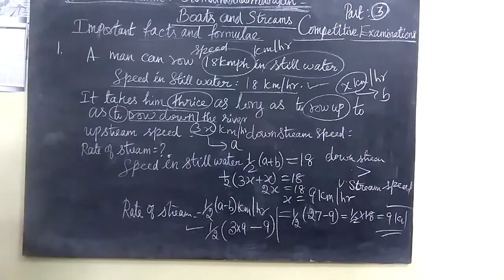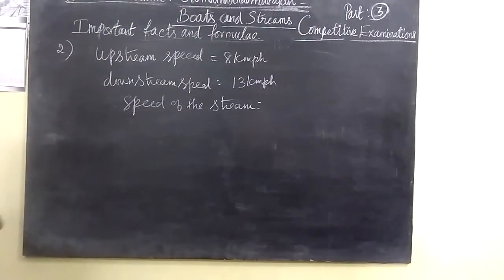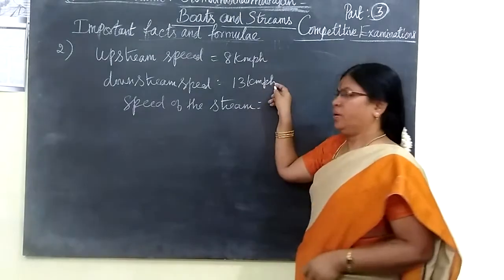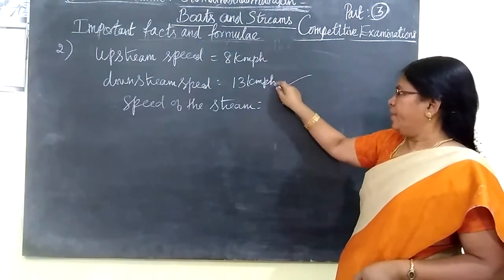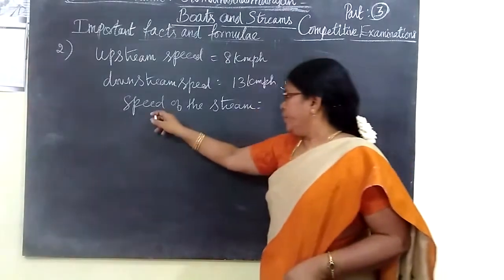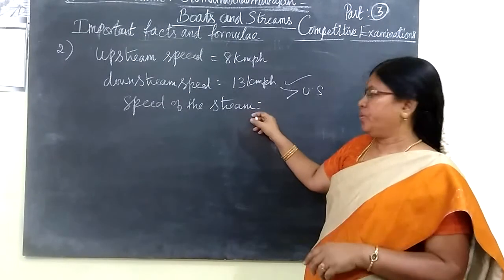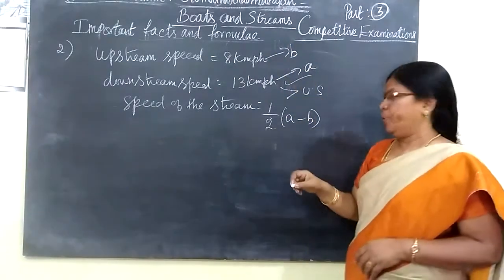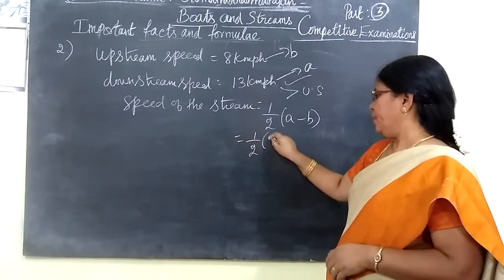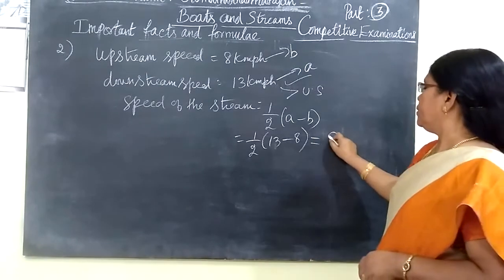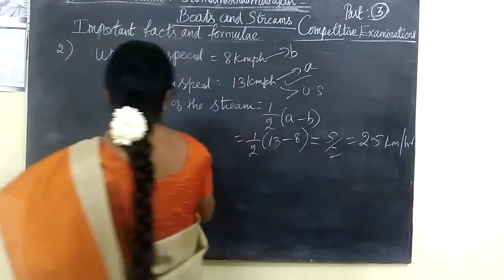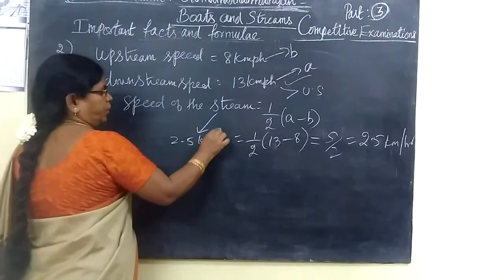Let us see one more problem. Here, the upstream speed is given as 8 km per hour, and the downstream speed is 13 km per hour. You can see that the downstream speed is greater than the upstream speed. We are going to find the speed of the stream. Speed of the stream = half bracket (A minus B) = half bracket (13 minus 8) = 5 by 2 = 2.5 km per hour.